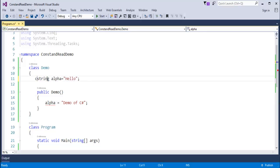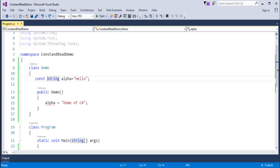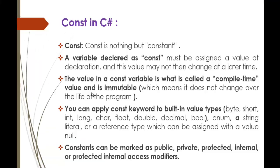If I remove the const keyword, the red squiggly disappears and it works fine. But if you assign the const keyword, the value is constant and we cannot change it — that is the meaning of immutable. The value in a constant variable is a compile-time value and does not change over the life of a program. You can apply the const keyword to built-in types: byte, short, int, long, char, double, float, etc. Also, const keywords can be marked as public, private, protected, internal, or protected internal.